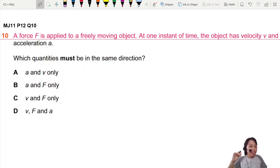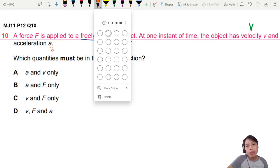This is a question that seems so simple but actually tests one of the largest misconceptions people can have about kinematics. Here you have a force applied to a freely moving object, and at one instant in time, the object has a velocity v and acceleration a.